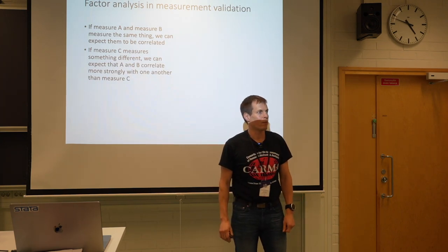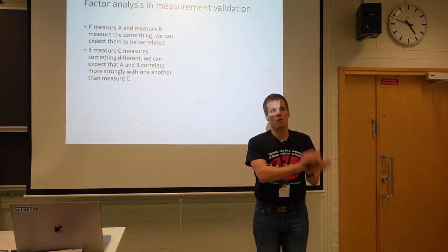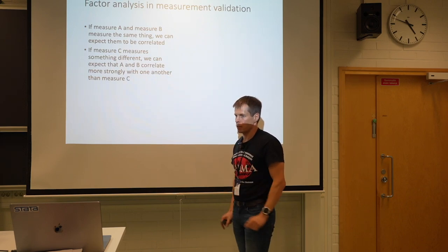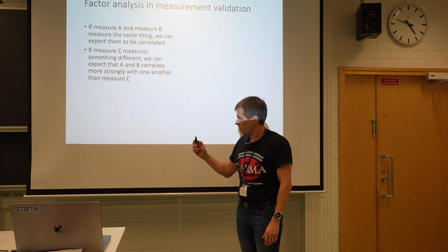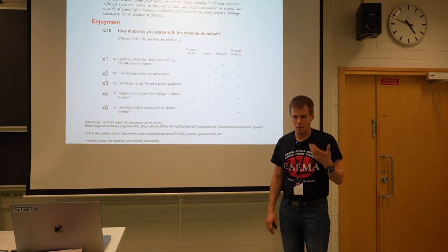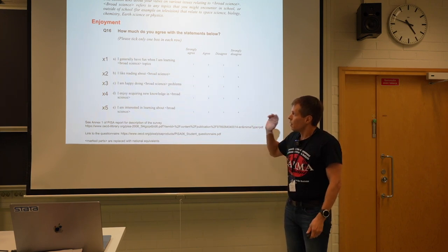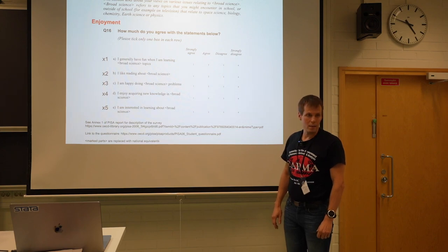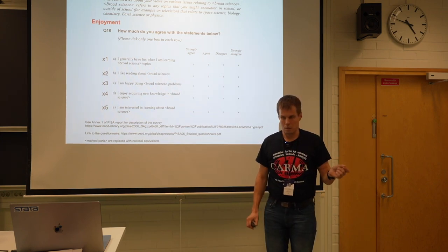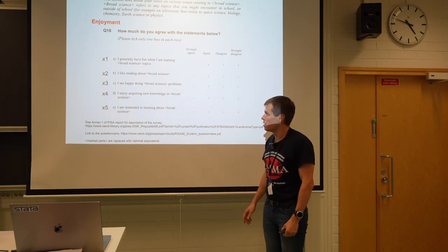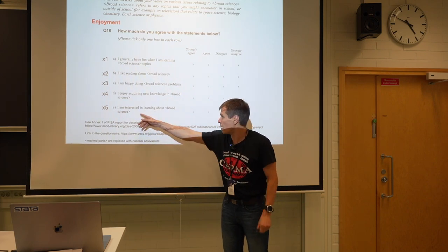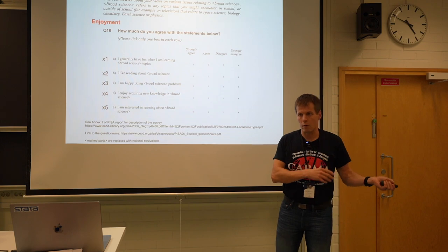If we have a measure C that measures something different — say, a person's self-reported height — we should expect that measure to correlate less with A and B than A and B correlate with each other. Factor analysis tests this kind of hypothesis. As an example from the PISA study, a five-item scale about enjoyment of science asks questions positioned in different parts of the survey that are all supposed to measure how much students enjoy science, so they should be highly correlated.